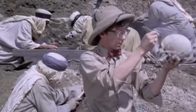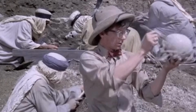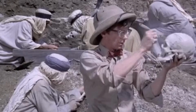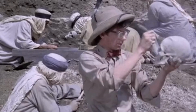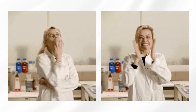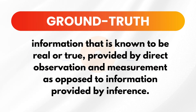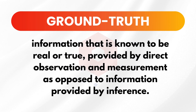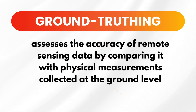Scientists can measure what has happened in the past — if the model fits the data, it is thought to be more trustworthy; if it doesn't fit, it's time to do more work. Ground truth is information that is known to be real or true, provided by direct observation and measurement as opposed to information provided by inference. Ground truth assesses the accuracy of remote sensing data by comparing it with physical measurements collected at the ground level.